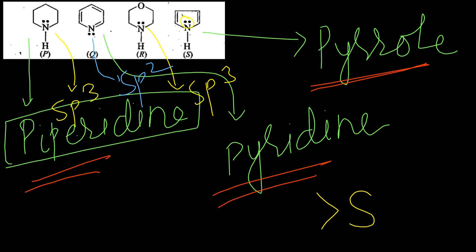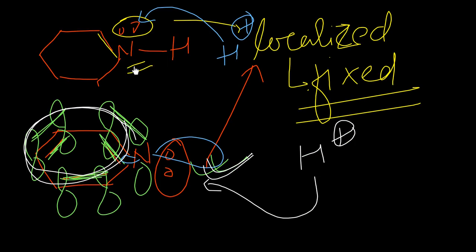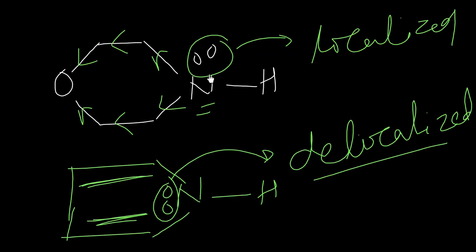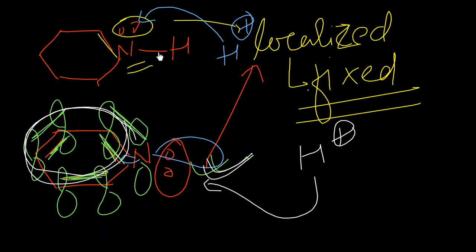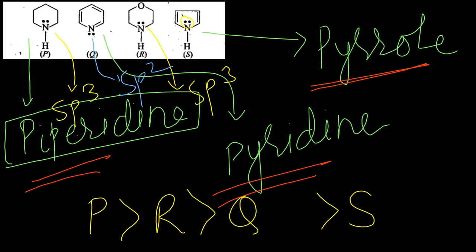Now comparing P and R: in the case of R, due to oxygen, the electron of nitrogen is withdrawn, which increases electronegativity slightly and nitrogen cannot easily donate its lone pair. So piperidine (P) is more basic than R, and R is more basic than Q.